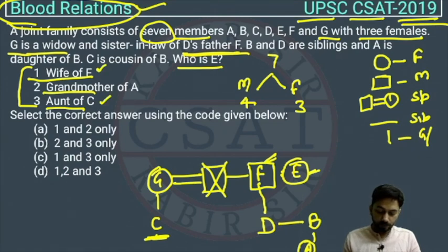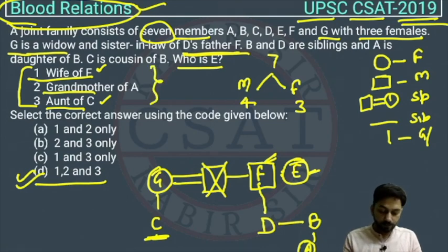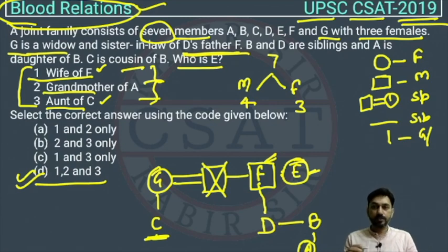If you are assuming E is the grandmother of A, then E will come here and all other options will automatically become correct. So the answer to this question is option D — first, second, and third all are correct.